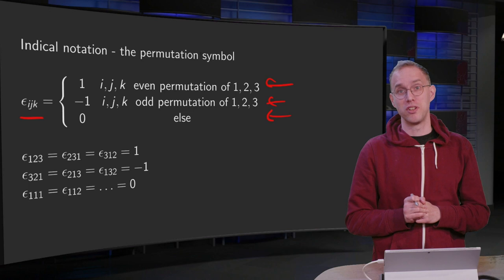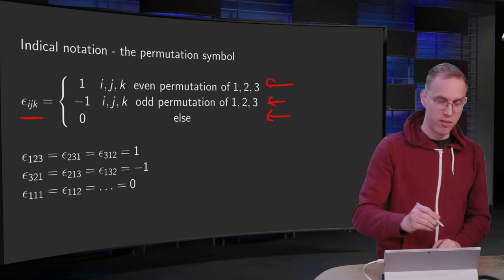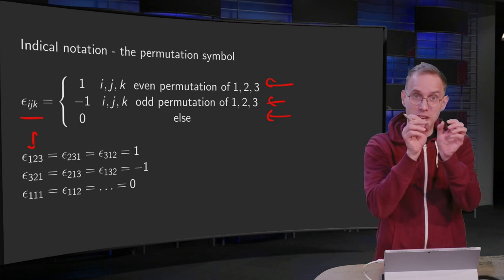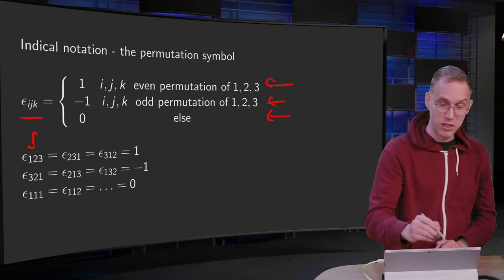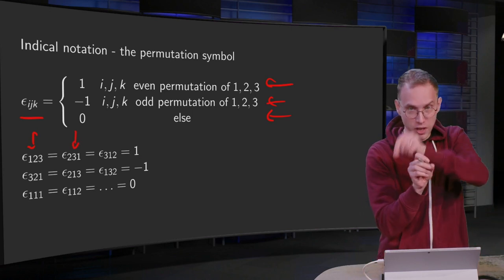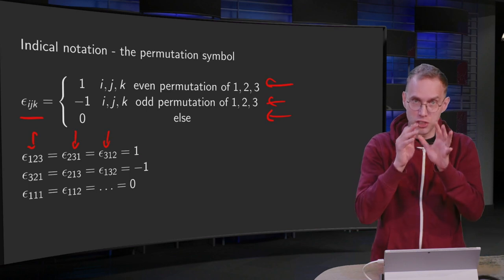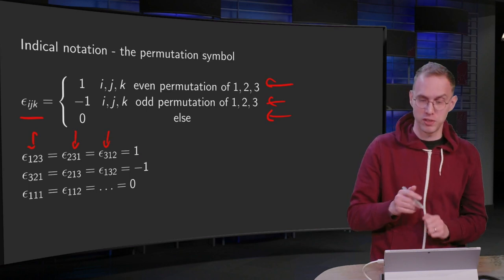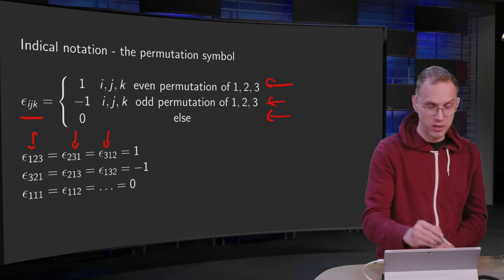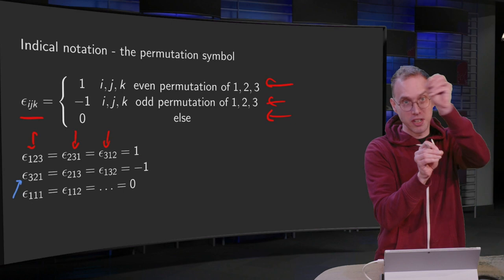That's a bit of a difficult definition, so how are we going to memorize this? First of all, epsilon_123 equals one. Now you leave the two and the three and put the one at the back, and it's also one. Then you leave the three and the one and put the two at the back — that's also one. I'll explain shortly why this works; this is just how to memorize which ones are one.